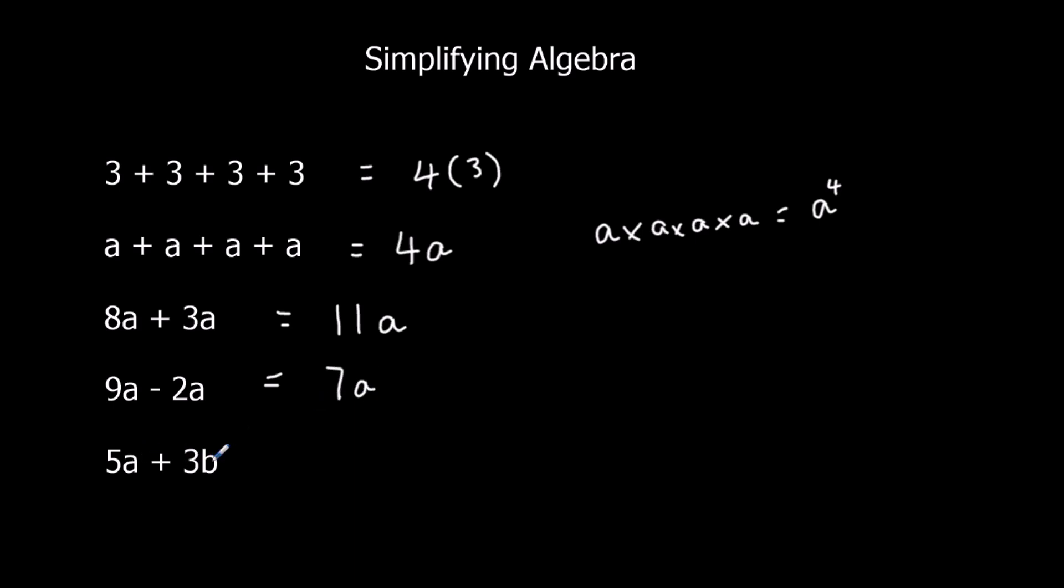And 5a plus 3b, we can't do. We can only add things if they're the same. So we can add a's to a's, and b's to b's, or 3's to 3's. But we can't add a's and b's together. So this is actually already in its simplest form.